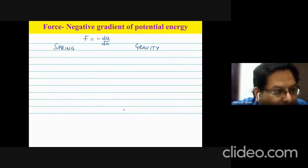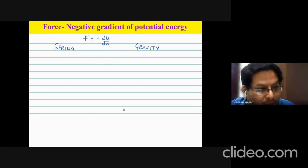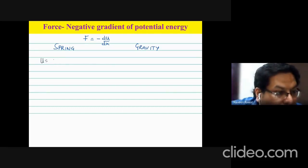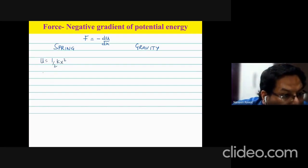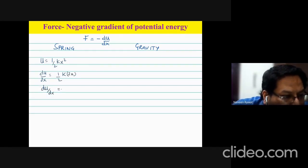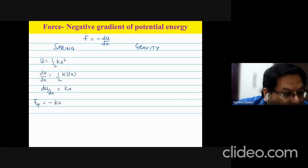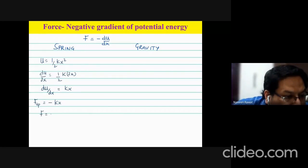For the spring, the potential energy is U = ½kx². Taking the derivative dU/dx: the factor ½ and k are constants, and differentiating x² gives 2x, so dU/dx = kx. Since the force exerted by the spring is F = −kx, this confirms the relationship F = −dU/dx, consistent with what we derived in the previous slide.